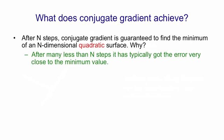More importantly, in many less than n steps on a typical quadratic surface, it will have reduced the error very close to the minimum value. And that's why we use it. We're not going to do the full n steps. That would be as expensive as inverting the whole matrix. We're going to do many less than n steps and we're going to get quite close to the minimum.